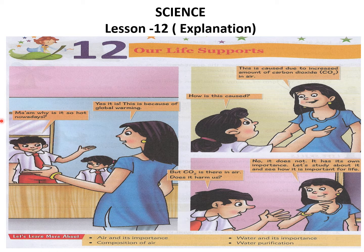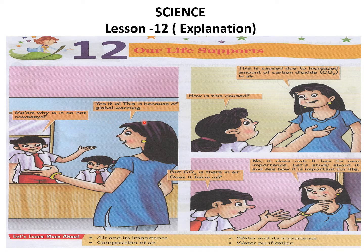A student is asking, 'Ma'am, why is it so hot nowadays?' Ma'am is saying yes it is, and this is because of global warming. Global warming means the temperature of the earth's atmosphere is increasing, and because of that it is very hot nowadays as compared to the olden days. The student then asks how this is caused, and ma'am says it is caused due to an increased amount of carbon dioxide in the air.